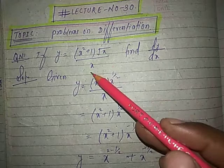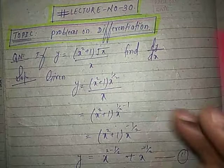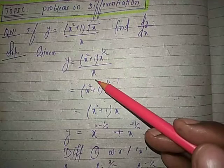If y is equal to x square plus 1 root x divided by x, find dy by dx. So first of all, we can modify it and simplify it. y is equal to x square plus 1, x to the power half, divided by x.